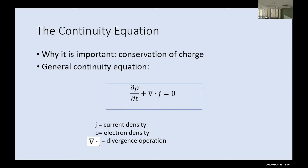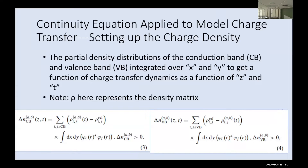Whatever charge there is has to be conserved. One way it's generally described is as the partial derivative of the charge density with respect to time added to the divergence of the current density. To adapt it to our system, we look at a couple of partial density distributions — the valence band on the bottom left and the conduction band on the right. To simplify our analysis, we integrate with respect to x and y and focus on the z dimension.